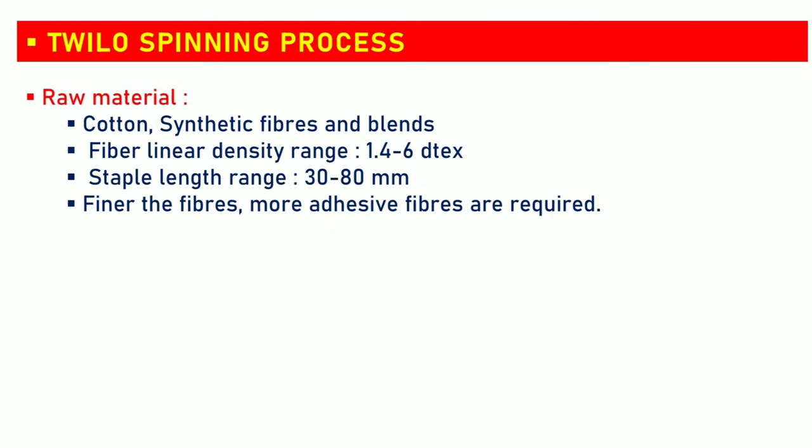Raw material in the Twilo spinning process can be cotton, synthetic fibers, and blends. Fiber linear density range is 1.4 to 6, and staple length range is 30 to 80 mm. The finer the fibers, the more adhesive fibers are demanded.